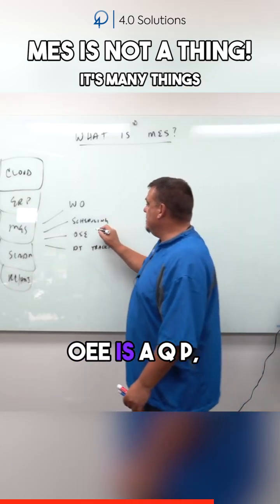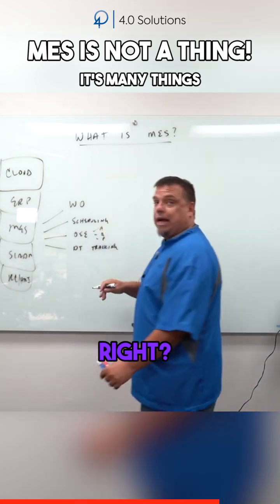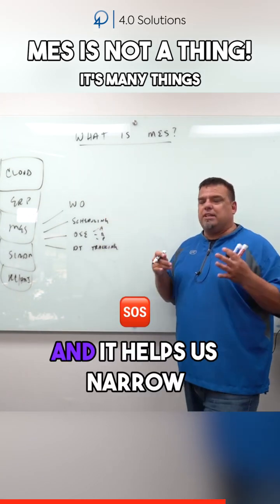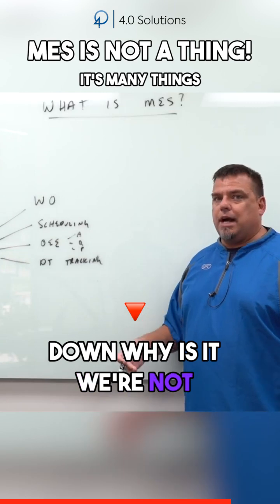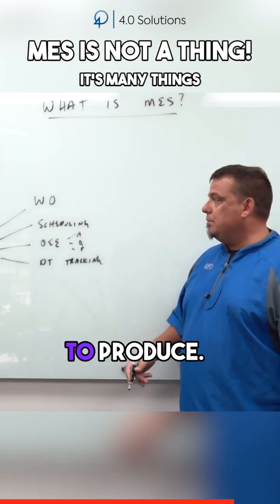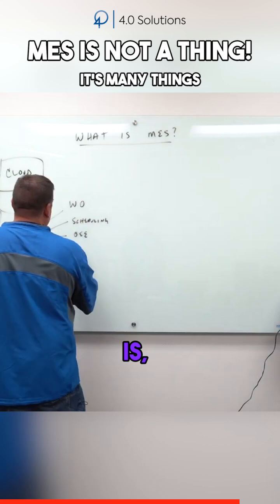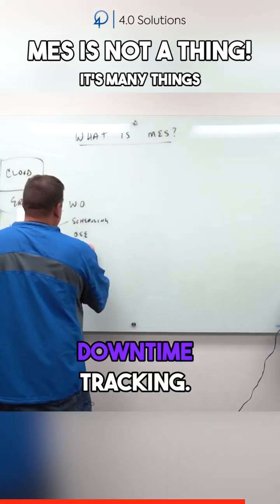OEE is A, Q, P — Availability, Quality, and Performance. It helps us narrow down why we're not producing what we want to produce. And then the last thing, and this is the most common, is downtime tracking. That's your Core Four.